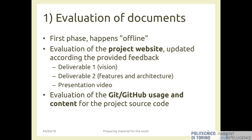I'll give some hints on how we evaluate things and how to get the best possible results. The first phase happens offline — you need to deliver all material typically three working days before the effective exam date. We will put the exact date on the course website in the exam section. In this phase we evaluate two things: first, the project website updated according to feedback received, specifically deliverable number one (vision), deliverable number two (features and architecture), and the presentation video.